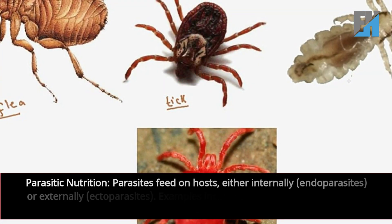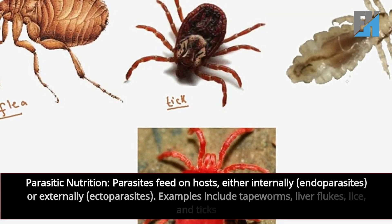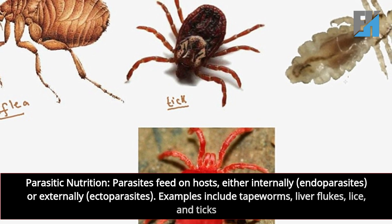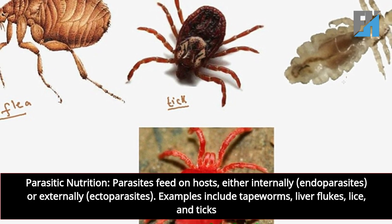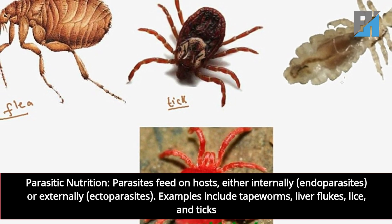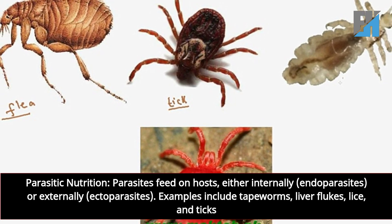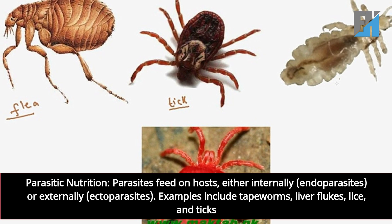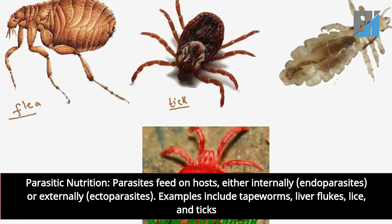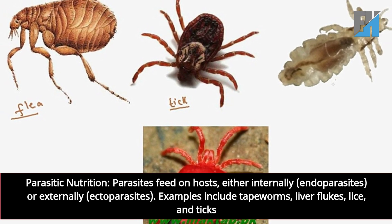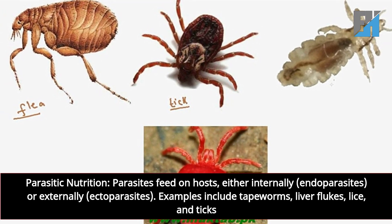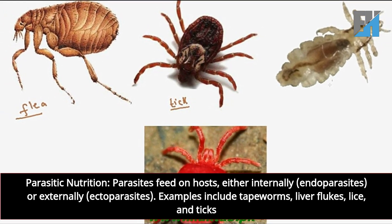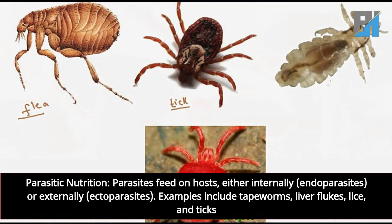Parasitic nutrition: parasites feed on hosts, either internally — endoparasites — or externally — ectoparasites. Examples include tapeworms, liver flukes, lice, and ticks.